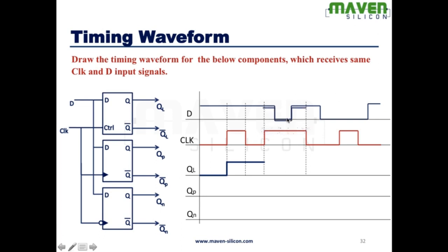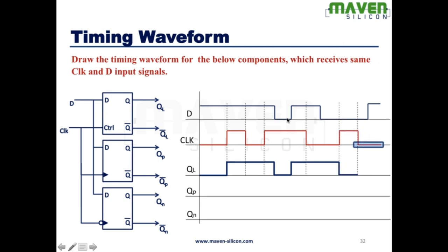Look at here — the same thing happens to the output. When the clock becomes low, it's going to retain the past state, so it stays high. Once again, when the clock becomes high, it's going to reflect the input — transparent device. Then it retains the same value because now the clock is low. This is how the latch works.